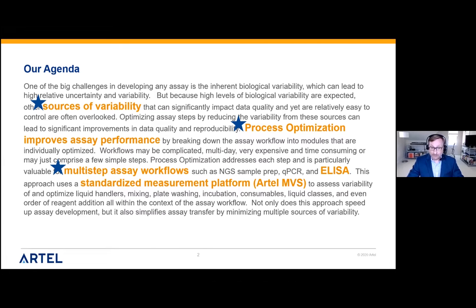Process optimization could technically be used on any assay, but it works really well for multi-step assays — complicated assays with several liquid handling steps, different reagent additions, washes, those types of things. ELISA assay formats are very common for this, but NGS sample prep or qPCR are very good examples of assay types that you can use process optimization on. Finally, I'd like to talk about the standardized measurement platform, the Artel MPS.